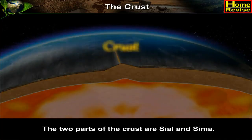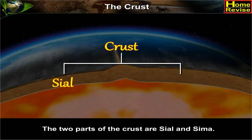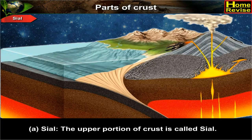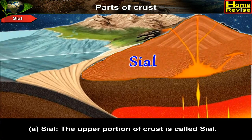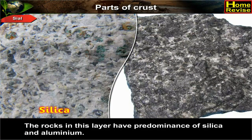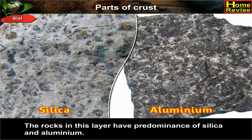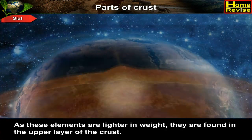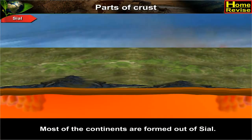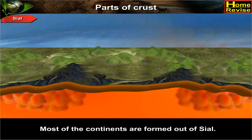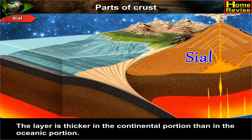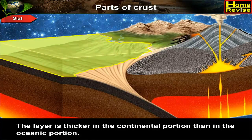The two parts of the crust are Sial and Sima. Sial: The upper portion of crust is called Sial. The rocks in this layer have predominance of silica and aluminum. As these elements are lighter in weight, they are found in the upper layer of the crust. Most of the continents are formed out of Sial. The layer is thicker in the continental portion than in the oceanic portion.